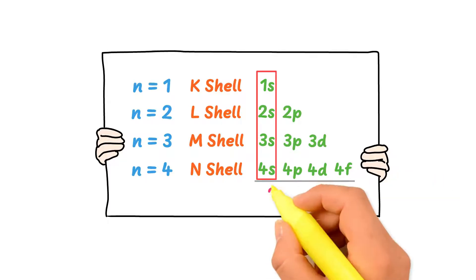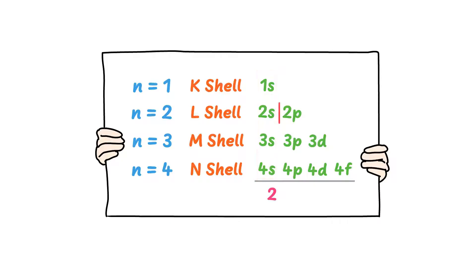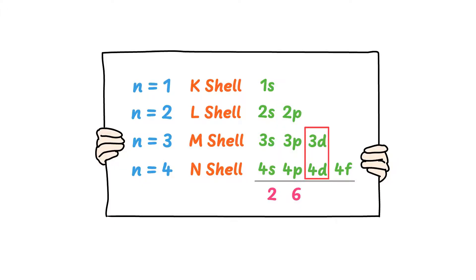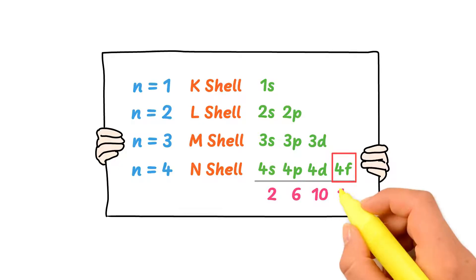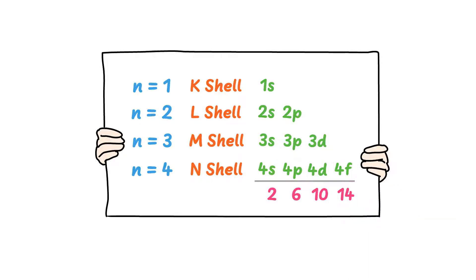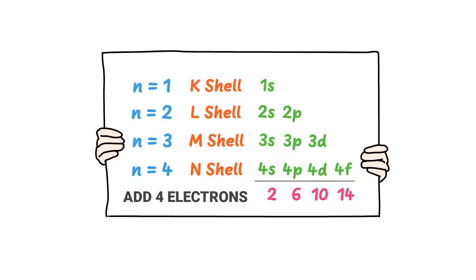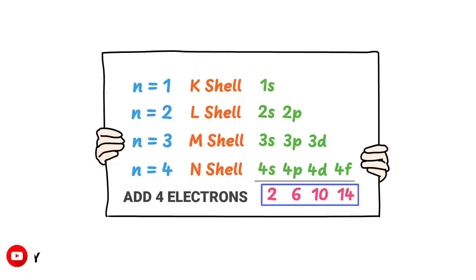Remember that the s subshell can accommodate only 2 electrons, the p subshell 6 electrons, the d subshell 10 electrons, and the f subshell 14 electrons. The easy trick to remember the number of electrons in subshells is to write 2 and then add 4 successively: 2, 6, 10, 14.